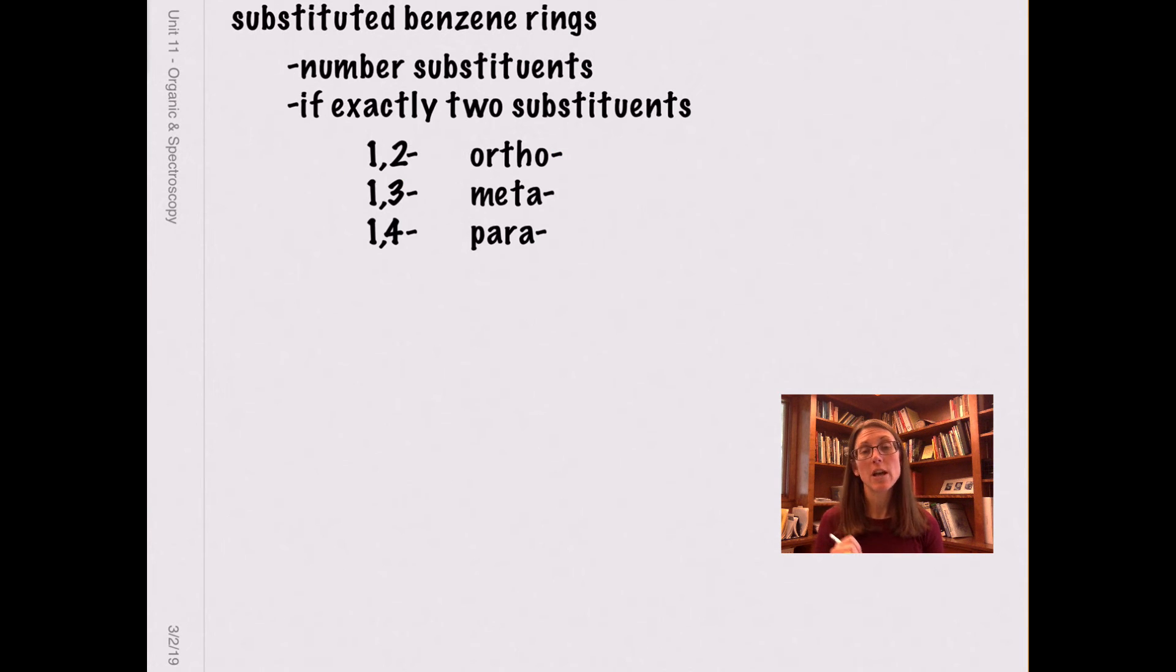Benzene rings are special. So they can either be a substituent if they are part of a molecule that has oxygen involved with it and therefore a higher priority substituent, or they can be their own core functional group. If they're a substituent, they're called a phenyl. However, if they're the most important thing going on, you're going to treat them similar to the way you would a cyclic alkane, and you're going to just number the substituents and say where they attach, making sure you get the lowest possible numbers and that the alphabetical first substituent gets the lowest number possible.